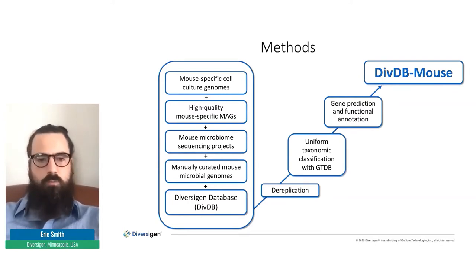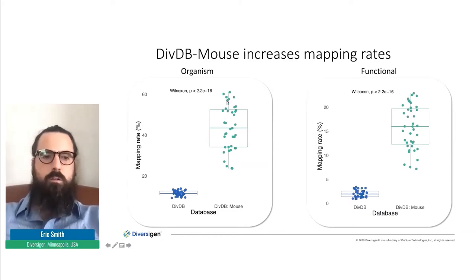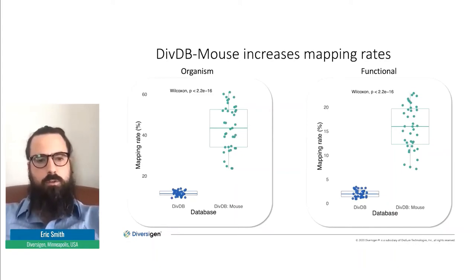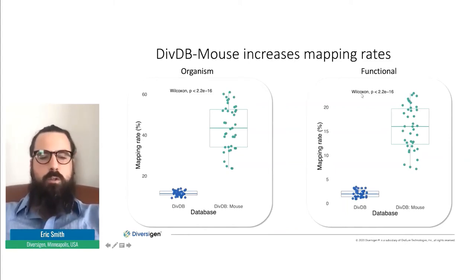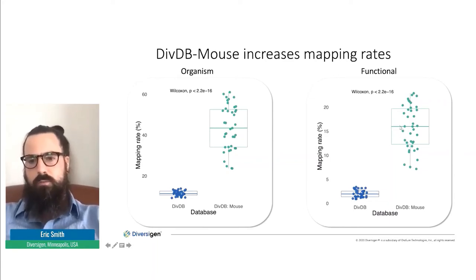So how does this database perform? Mapping rates are greatly increased when we use DivDB Mouse versus just our RefSeq representation. When we take mouse fecal samples and map them to DivDB, we get mapping rates just above 10%. When we map to DivDB Mouse, those increase to just above 40%. On the functional side, we go from right around 2% mapping rates to the functional aspect of DivDB up to about 16-17% when we map to the functional aspect of DivDB Mouse.